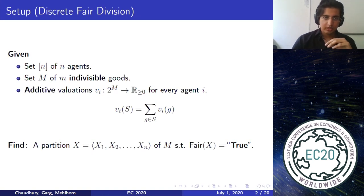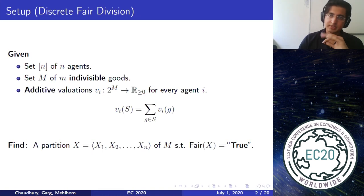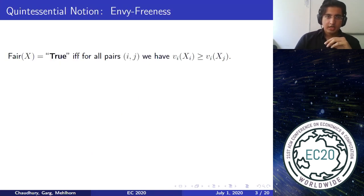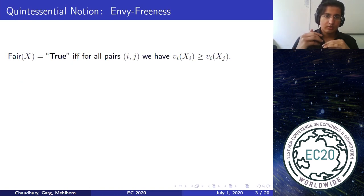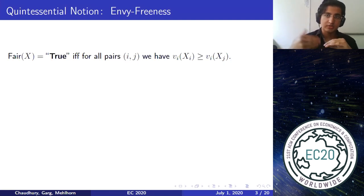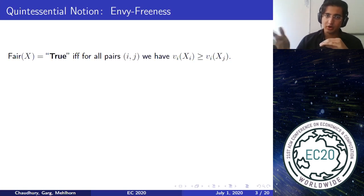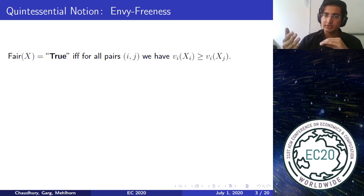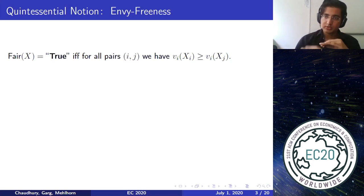I'll be talking about envy-freeness and its variants. The quintessential notion of fairness is envy-freeness. Given a partition X1 up to Xn, agent i envies agent j if i strictly prefers j's bundle to their own. An allocation is envy-free if for all pairs of agents i and j, i does not strictly prefer j's bundle to their own — that is, V_i(X_i) ≥ V_i(X_j).